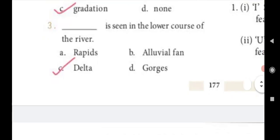Question three: This is seen in the lower course of the river. Answer C, delta. Delta is seen in the lower course of the river.